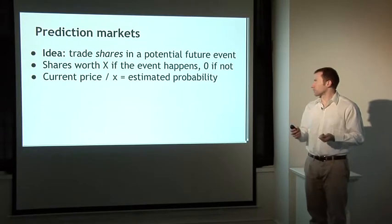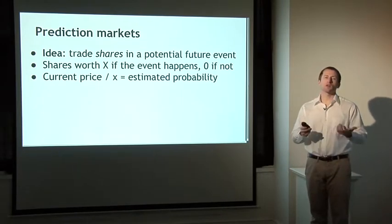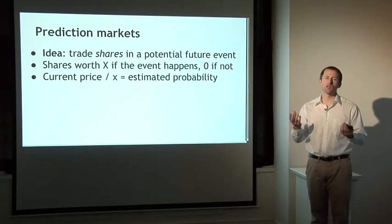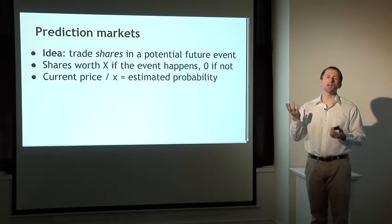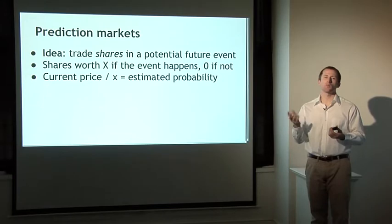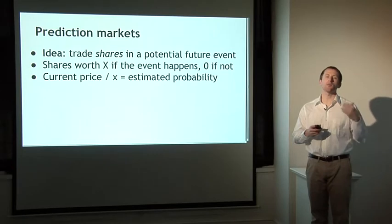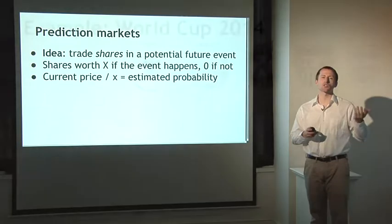So what's a prediction market? Quite simply, it's a market where you can trade shares in potential future events. You can have a share in some event — the event might be the Yankees win the World Series in 2014 — and that share will be worth some price X if the event actually happens and worth nothing if it doesn't. Before the event is certain, there will be some price at which that asset is trading, and that price will indicate the probability that people believe the event is likely to actually occur.